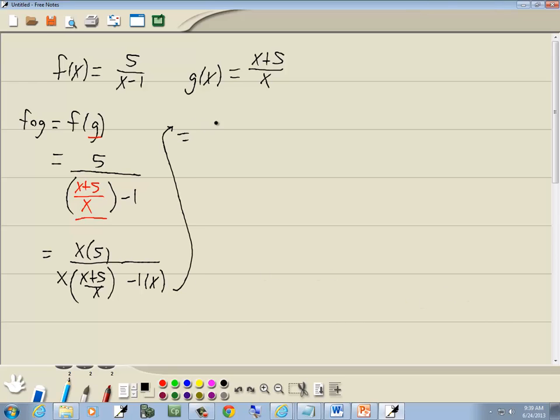Well, x times 5 is 5x. Here, these x's cancel, and we've got x plus 5. Negative 1 times x is negative x. Well, the x's in the denominator cancel, so that gives us 5 down there. And then the 5's cancel and gives us x.